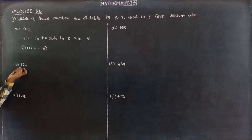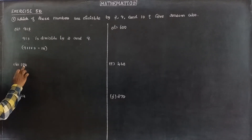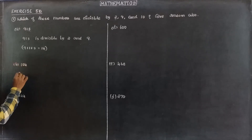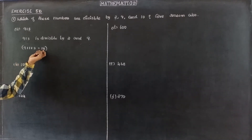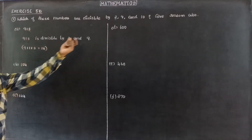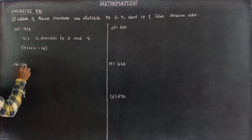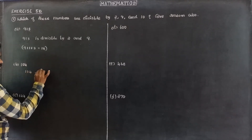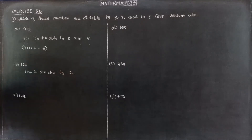Next, 104. This is also an even number, so it is divisible by 2. The sum of the digits is 1 plus 0 plus 4 equals 5, which is not divisible by 9. The last digit is 4, not 0, so it is not divisible by 10. Therefore, 104 is divisible by 2 only.